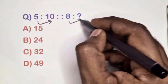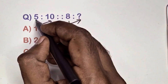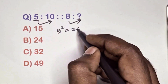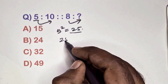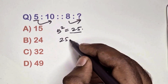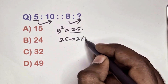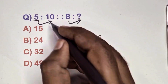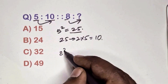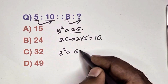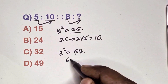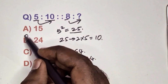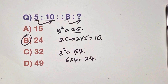Find the relation between these numbers. Take 5 — 5 squared is 25, then multiply the digits of 25: 2 times 5 gives 10. Take 8 — 8 squared is 64, then multiply 6 and 4 to get 24. Option B is the correct answer.